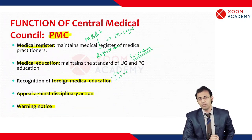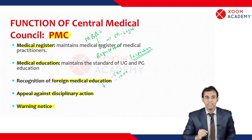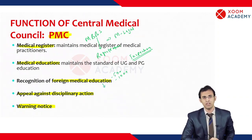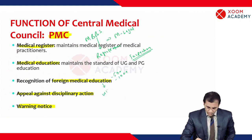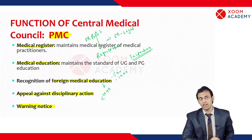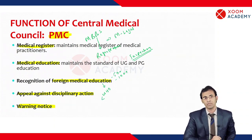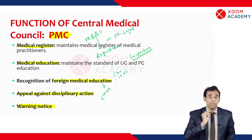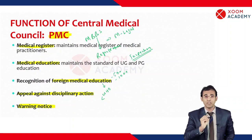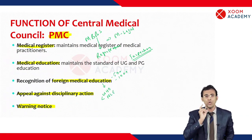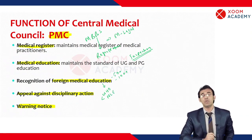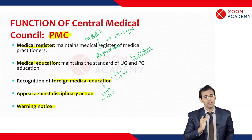Regarding recognition of foreign medical education — if you have done your MBBS from a foreign university like Russia, Georgia, or Ukraine, first that university must be recognized by WHO and also by your PMC. Second, after completing your MBBS abroad, you must return to your country and write your licensing exam. Once you pass the licensing exam, only then will you receive your country's license number.